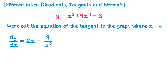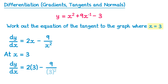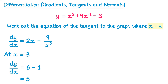We need the gradient where x equals 3, so we substitute into the gradient function: dy by dx equals 2 lots of 3, take away 9 over 3 squared. That gives 6 minus 9 over 9, which is 6 minus 1, equalling 5. So the gradient of the tangent at this point is 5.